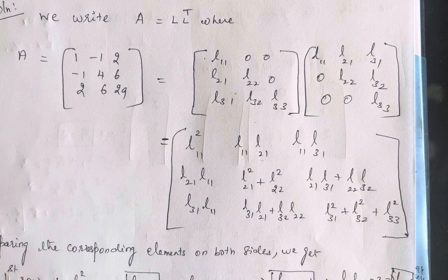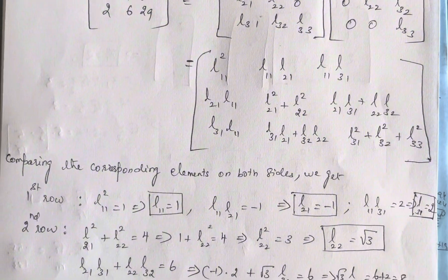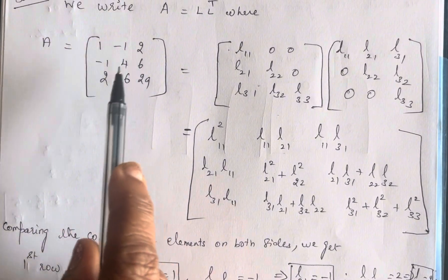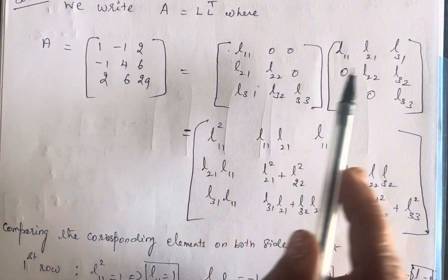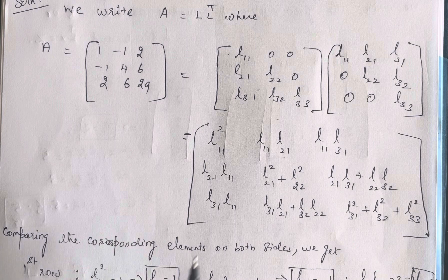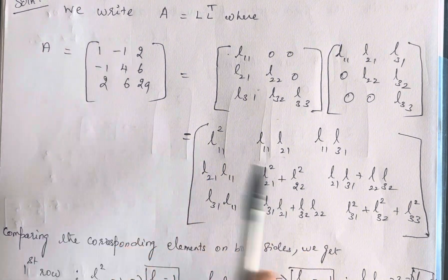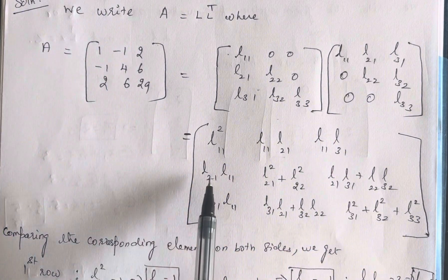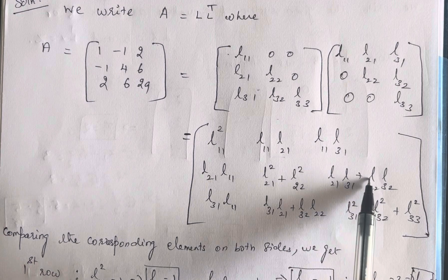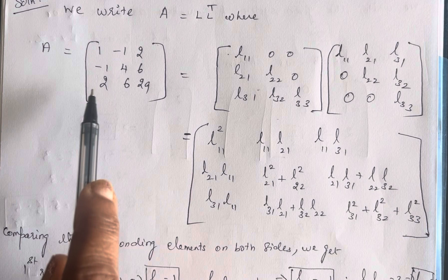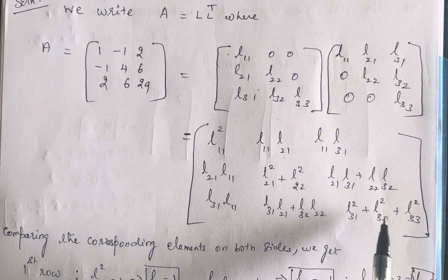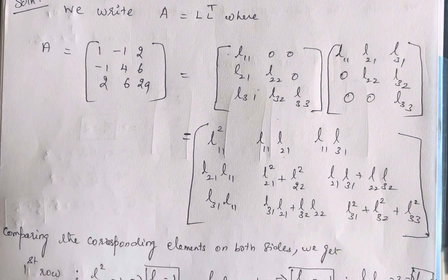Since these two matrices are equal, we compare the corresponding elements on both sides. We get: L11² = 1; L11·L21 = -1; L11·L31 = 2; L21² + L22² = 4; L21·L31 + L22·L32 = 6; L31·L11 = 2; L31·L21 + L32·L22 = 6; L31² + L32² + L33² = 29.